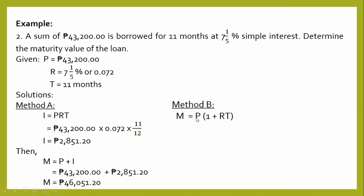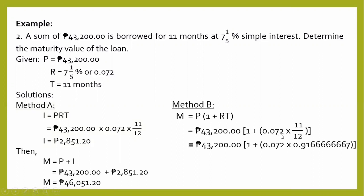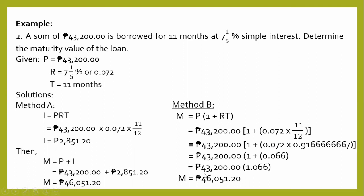For Method B, we use M equals P times the quantity 1 plus RT. Substituting: 43,200 times the quantity 1 plus 0.072 times 11 divided by 12. That gives 11 divided by 12 equals 0.91667; times 0.072 equals 0.066; then 1 plus 0.066 equals 1.066; and 1.066 times 43,200 gives a maturity value of 46,251 pesos and 20 centavos — the same answer as Method A.